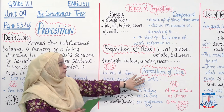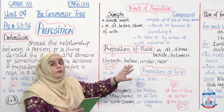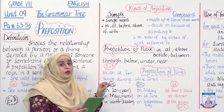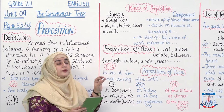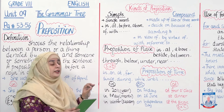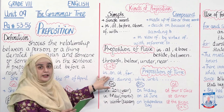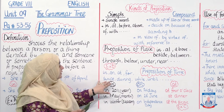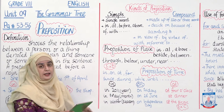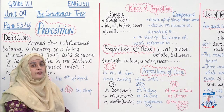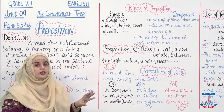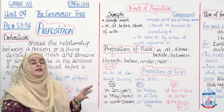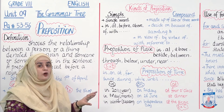We move on to preposition of time — kis waqt the subject or verb was at a specific place. Its examples are: in, on, for, since, during, while, until. But prepositions of time have specific placement — 'in' is general, while 'on' and 'at' are specific. 'In' is used with the year, the month, or the season.